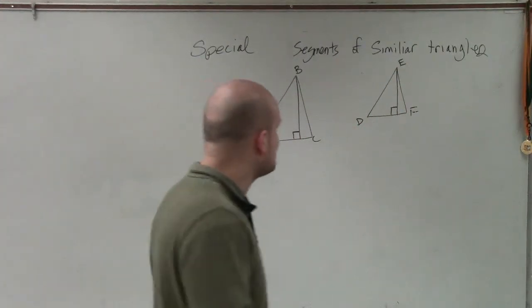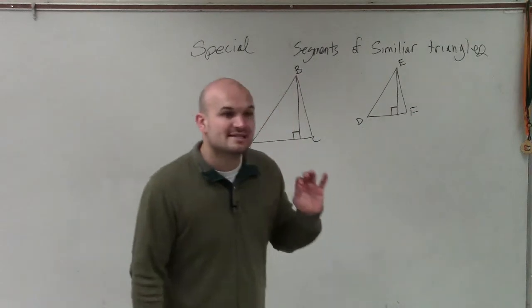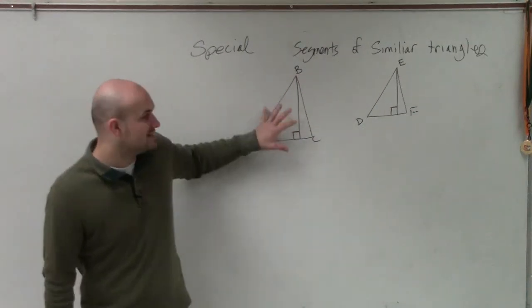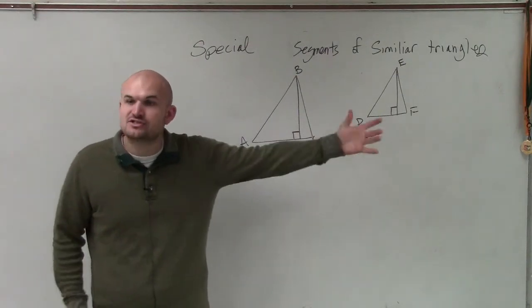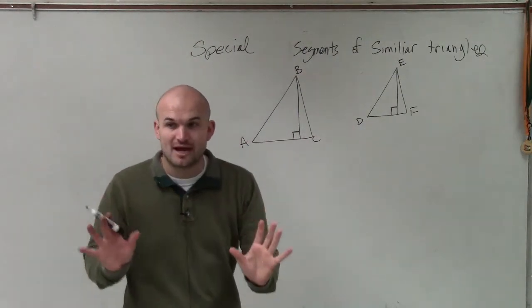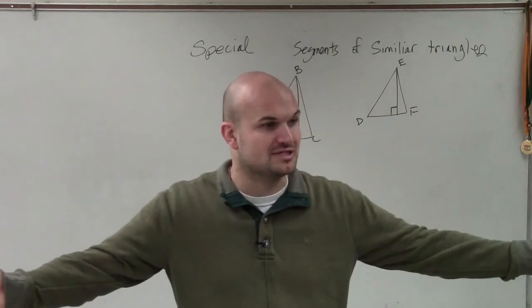So what is nice about if we have similar triangles, notice that these two triangles are the same shape, but they're not necessarily the same size. They're similar. Now, we know that similar triangles are already proportional on their sides, correct?